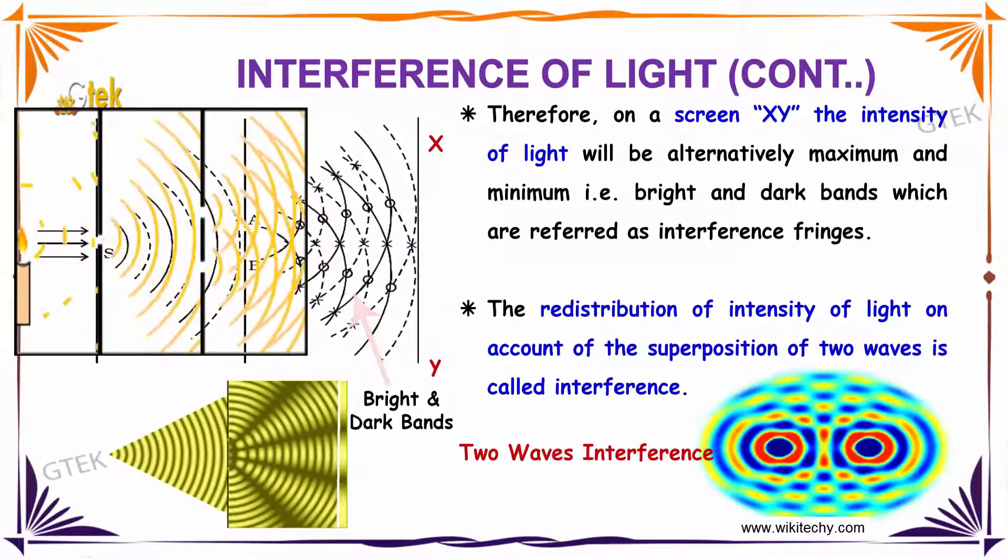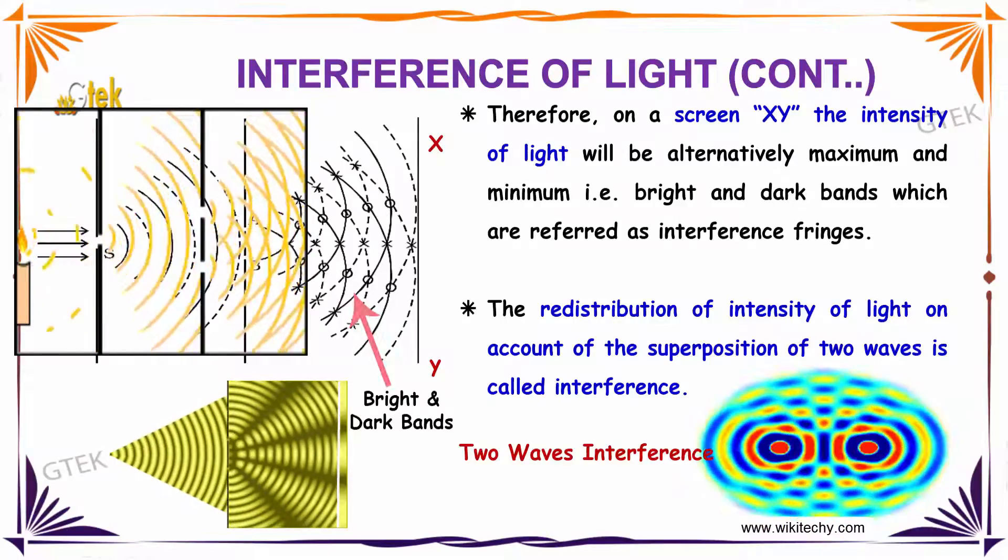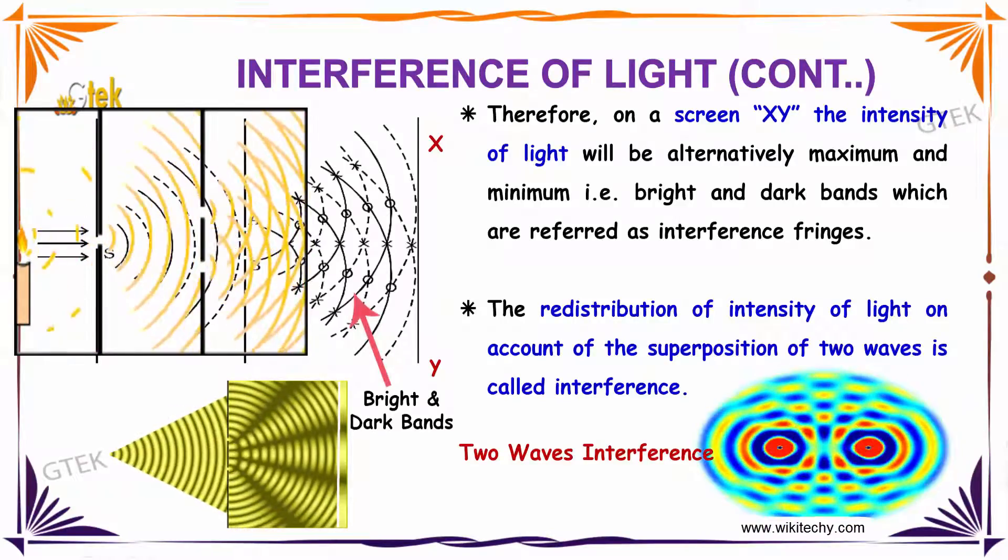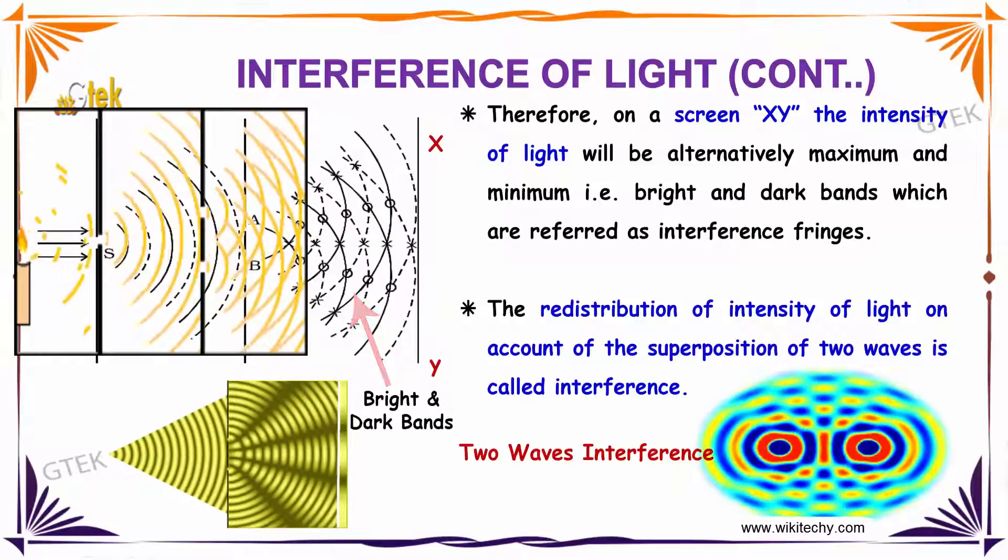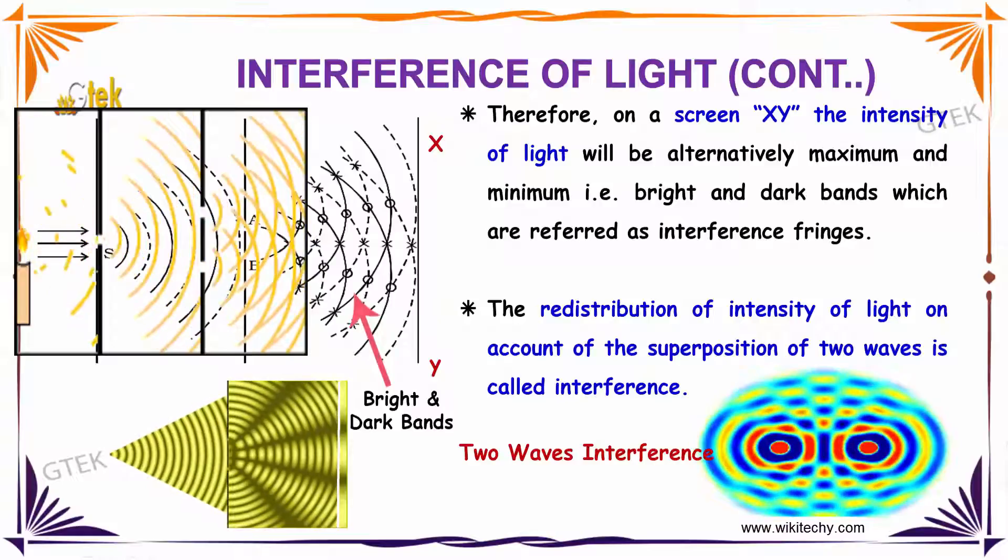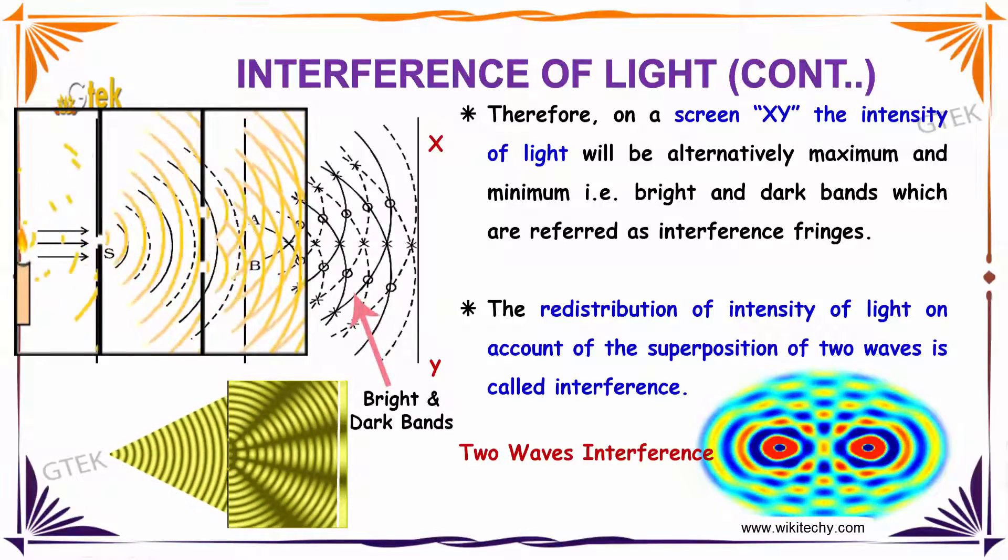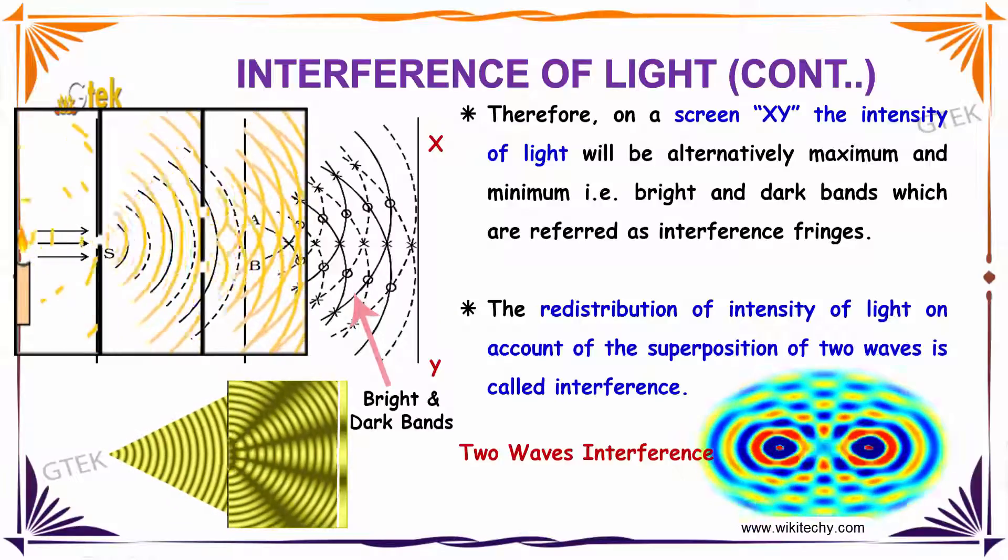Therefore, on a screen XY, the intensity of light will be alternatively maximum and minimum, the bright and dark bands, which are referred to as interference fringes. The redistribution of intensity of light on account of the superposition of two waves is called interference.